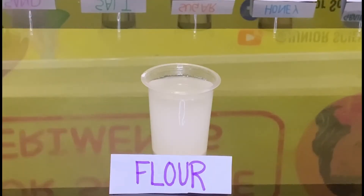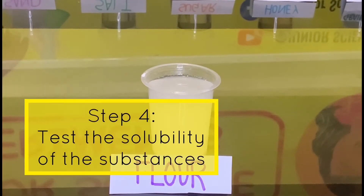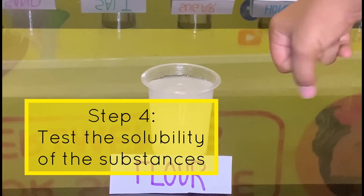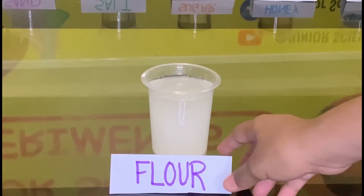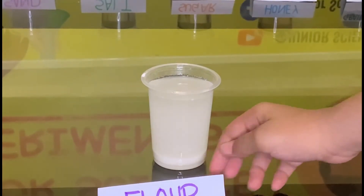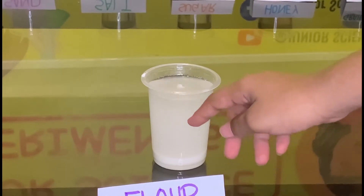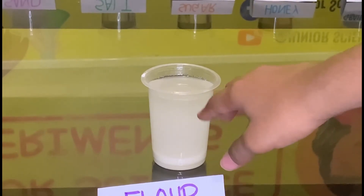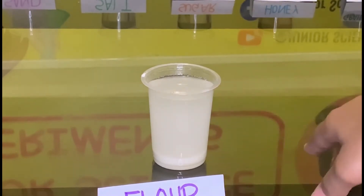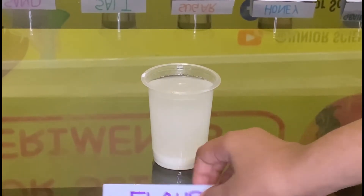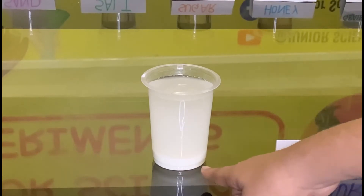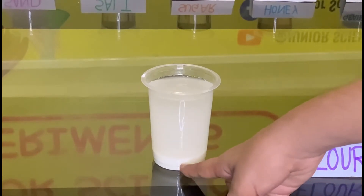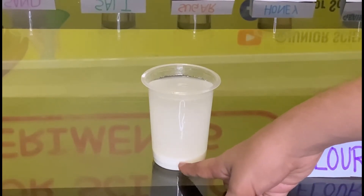As you can see, the flour hasn't dissolved in the water. The water is cloudy and misty, and you can see the flour settled at the bottom of the cup.